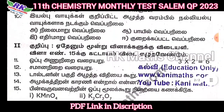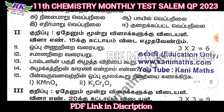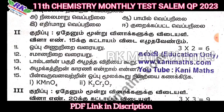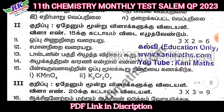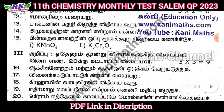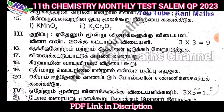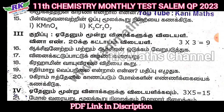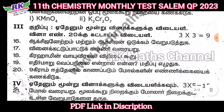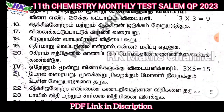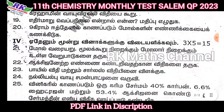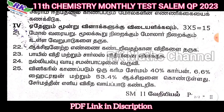Next, there are two-mark questions — any three questions, with question number 15 being compulsory. Then there are three-mark questions, also any three questions, with question number 20 being compulsory. Finally, there are five-mark questions — three questions, making 15 marks.